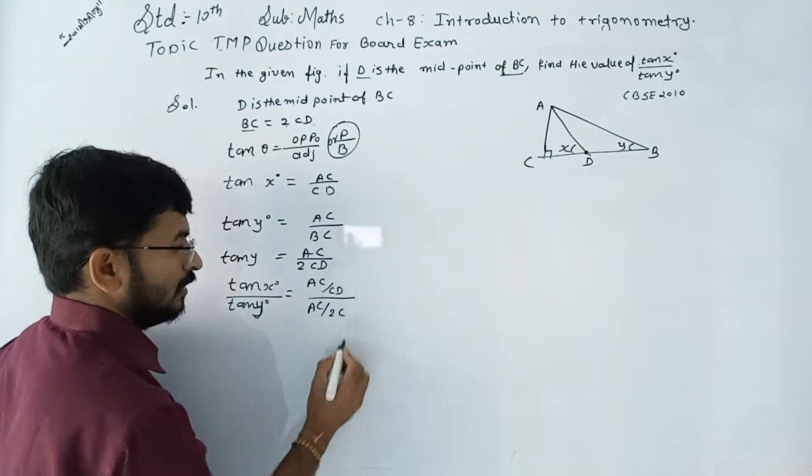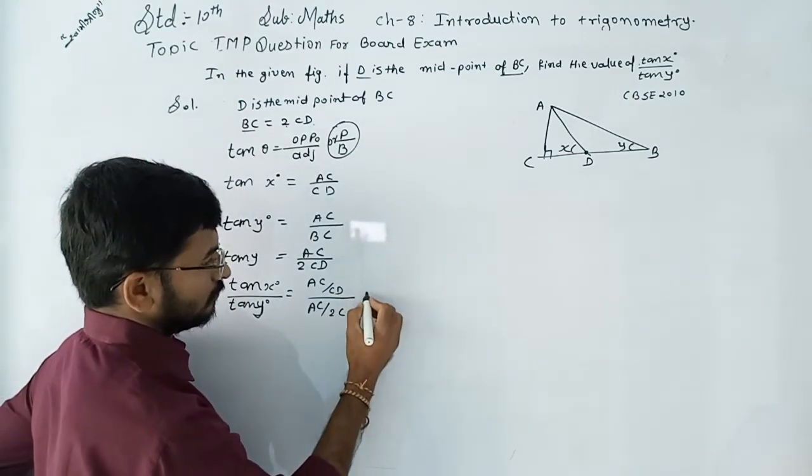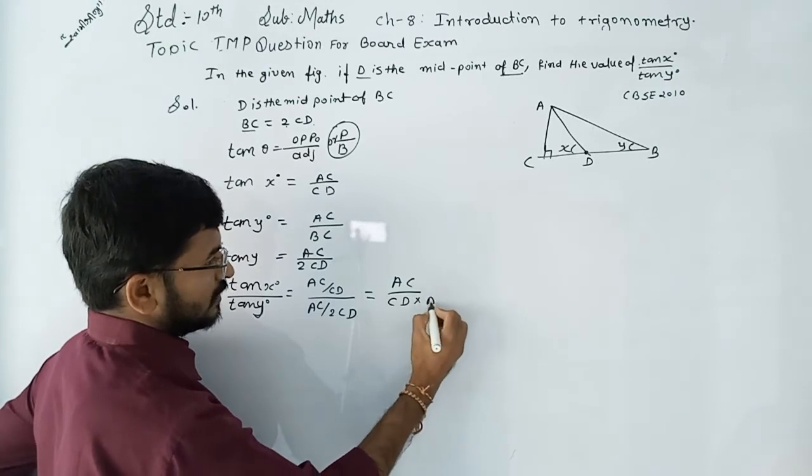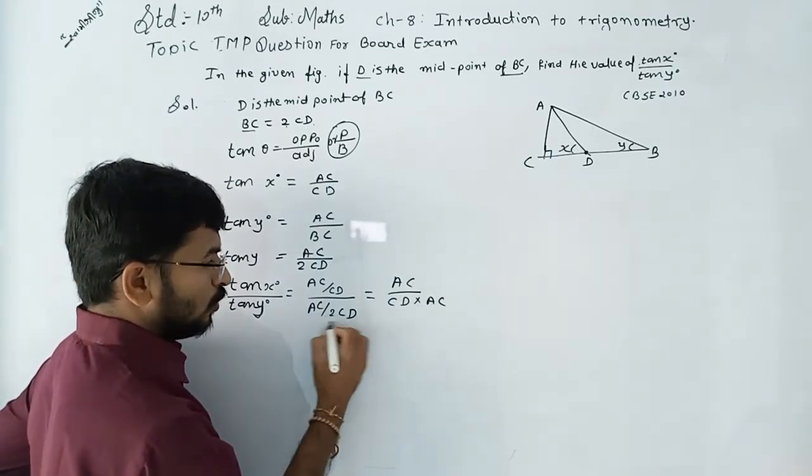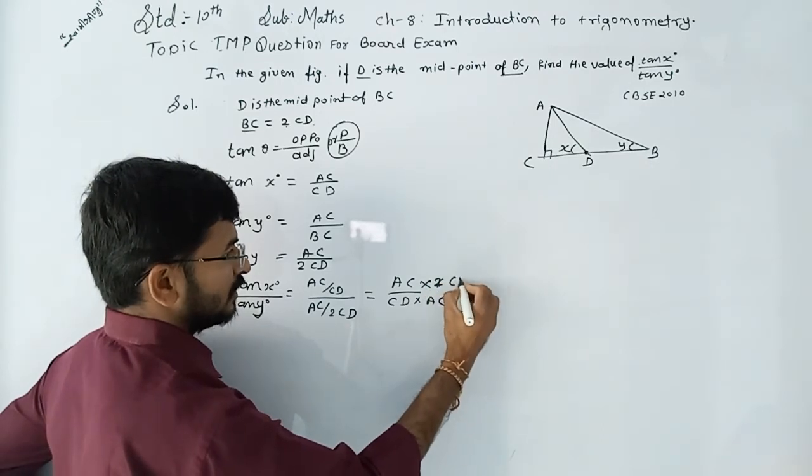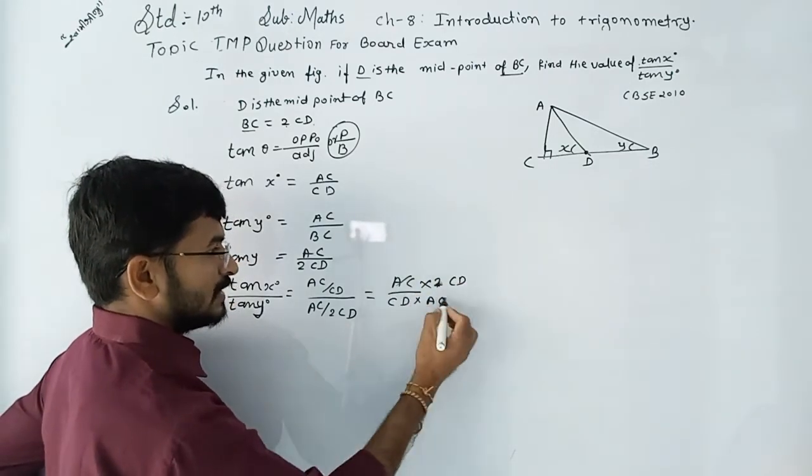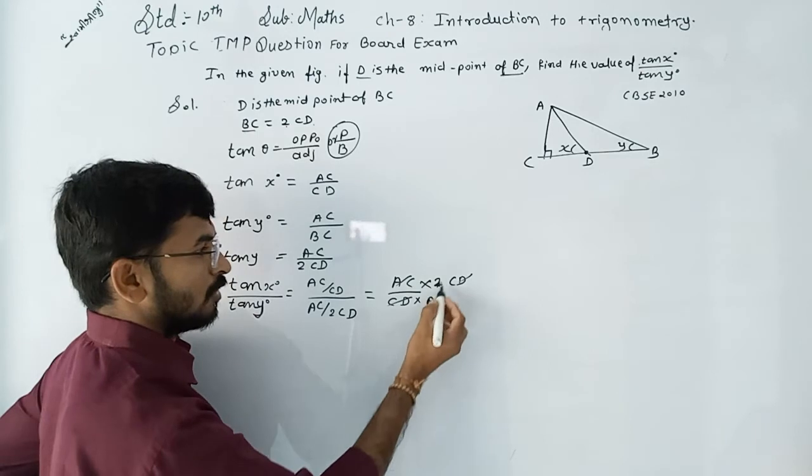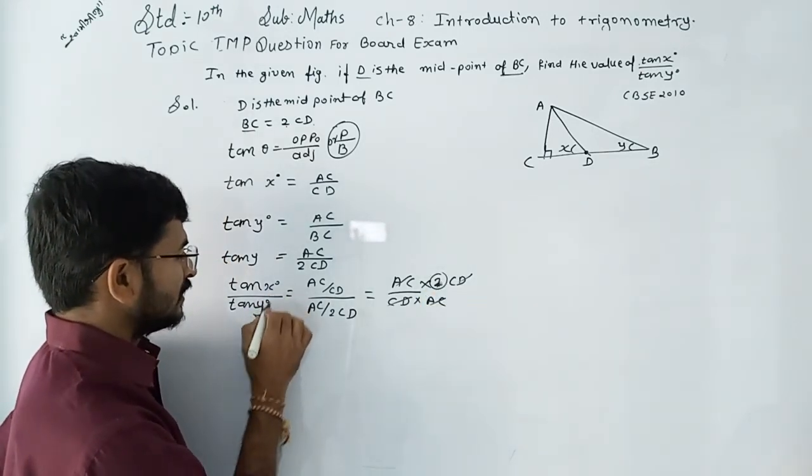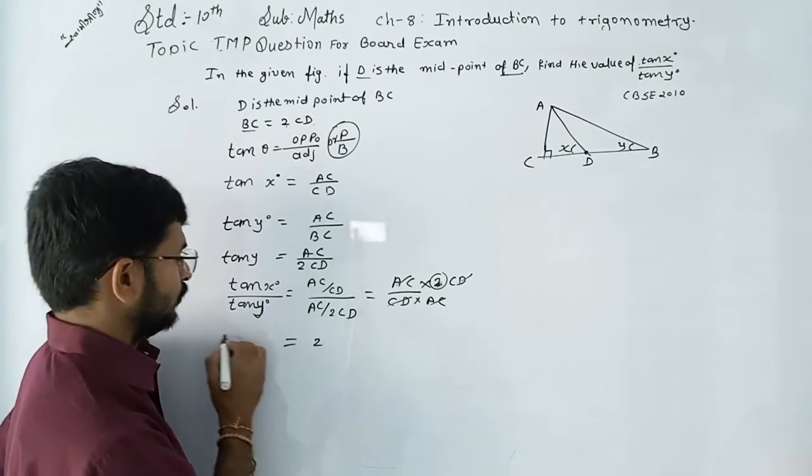Now, AC upon CD divided by AC upon 2CD. The 2CD goes into the numerator, so we have AC upon CD times 2CD upon AC. AC and AC cancel out, and CD and CD cancel out. You only remain with value 2. So tan(x) upon tan(y) is equal to 2.